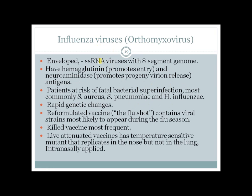Influenza virus has a negative-strand RNA with an eight-segment genome. Its most important virulence factors are Hemagglutinin, which helps viral entry, and Neuraminidase, which promotes release of progeny virions. If an older person gets influenza infection, they are more likely to have a fatal bacterial superinfection, most commonly by Staph aureus, Streptococcus pneumoniae, or Haemophilus influenzae.